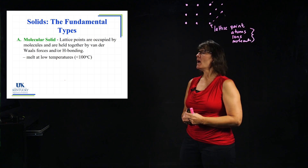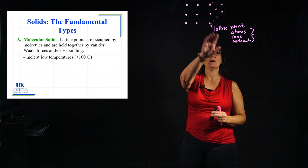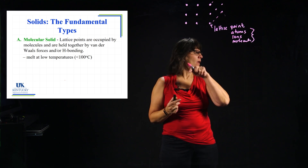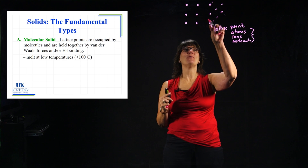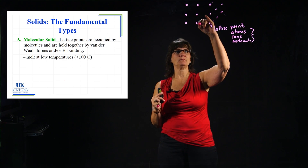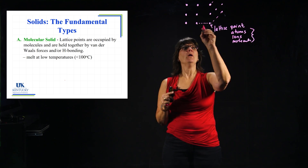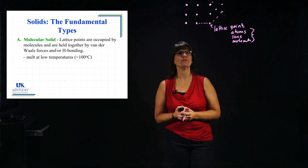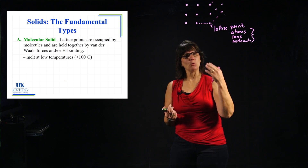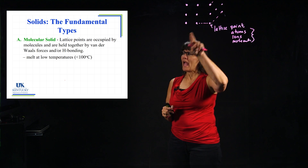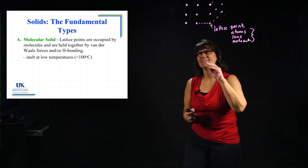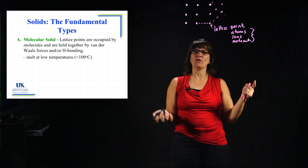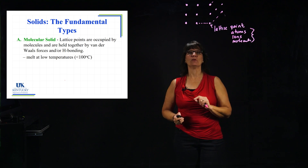The first type is the molecular solid. At these lattice points are going to be molecules — obviously that's where it gets its name. What holds them together are our intermolecular forces. We know that intermolecular forces are fairly weak compared to bonds, so this is going to make them melt at low temperatures. It doesn't take a whole lot of thermal energy to break that attraction and turn this into a liquid phase.